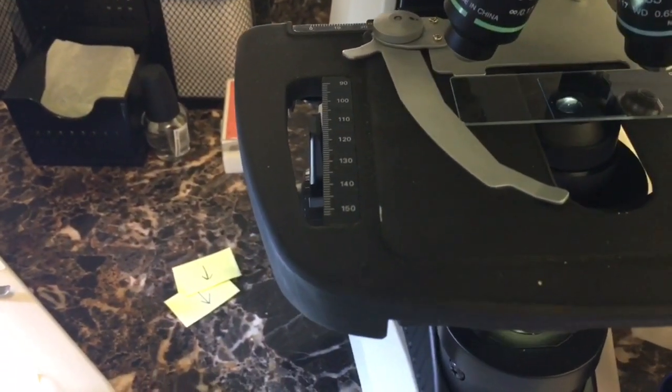The dye, if you're curious, is lactophenol cotton blue, which tends to stain chitin dark blue, which brings out the edges of hyaline structures.